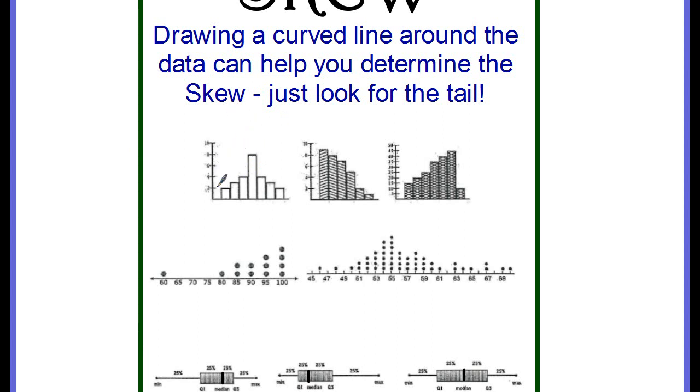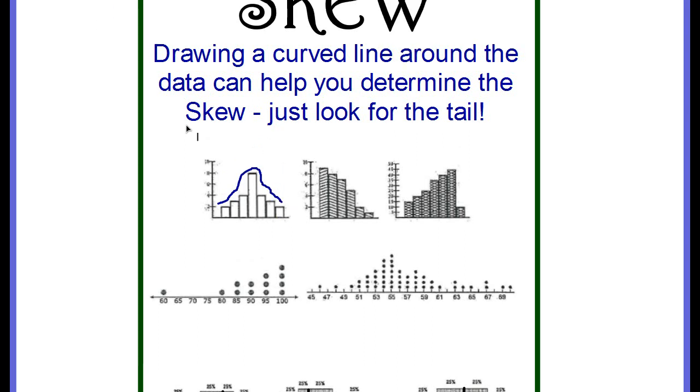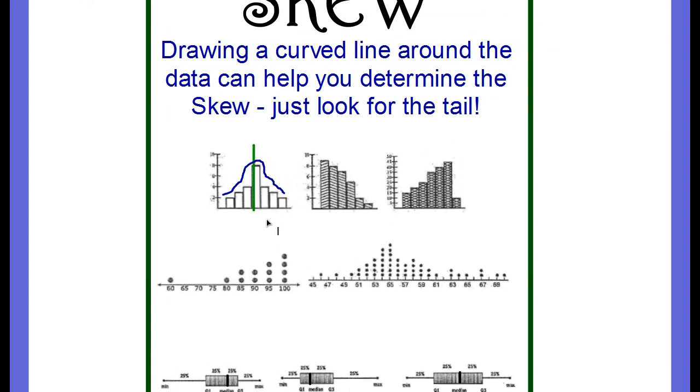So if I go on this one, this one is actually not skewed, is it? I could draw a line down the middle around the center, and the two sides look to be about the same. So this first graph is symmetric.